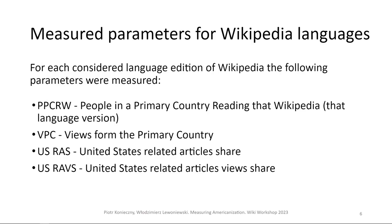In our research we developed several parameters, such as how many people in a given country are actually reading a given Wikipedia. That's an issue because in small countries many people go and read another Wikipedia instead. For example, in countries such as Estonia or Norway, a lot of people speak English, and instead of developing their own language Wikipedia, they just go to the English one. This is one of the issues we had to deal with.